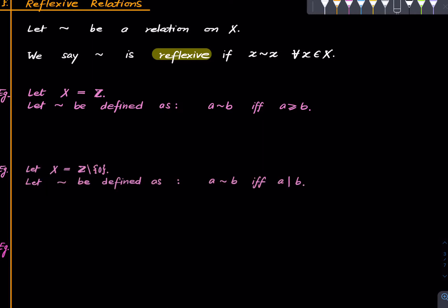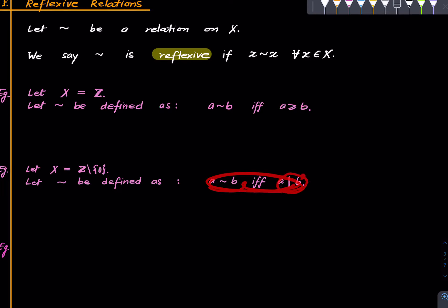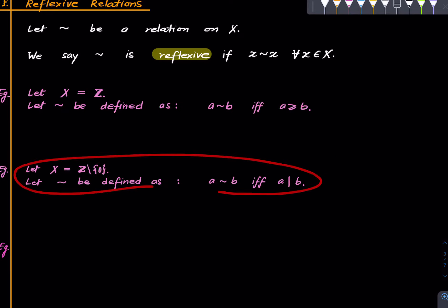Another example: take the set of all non-zero integers and define a tilde b if and only if a divides b. This is a reflexive relation simply because a divides a for all non-zero a — that is why we have excluded zero. So this is another example of a reflexive relation.